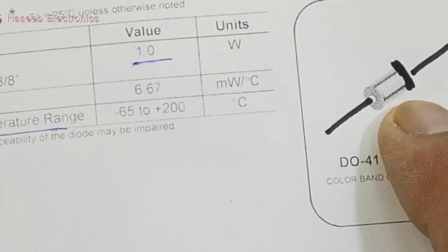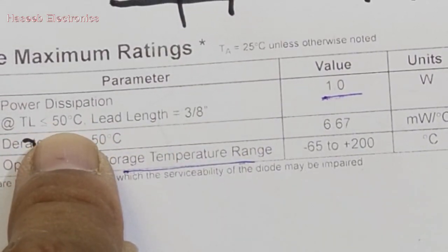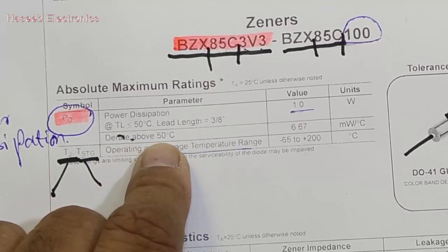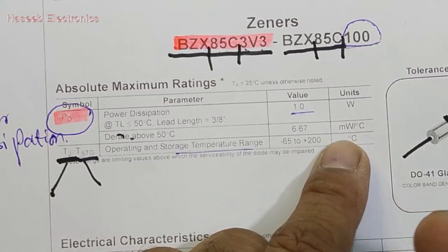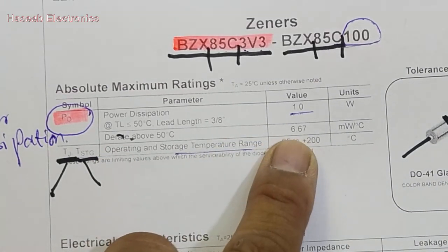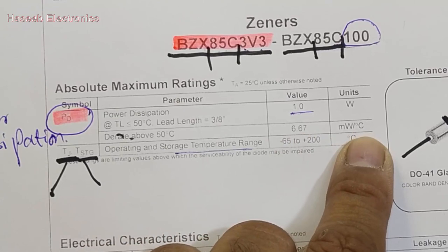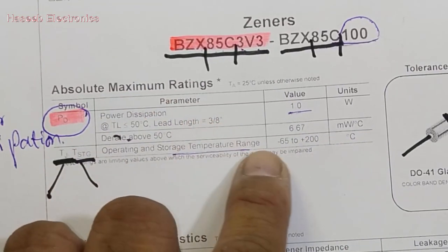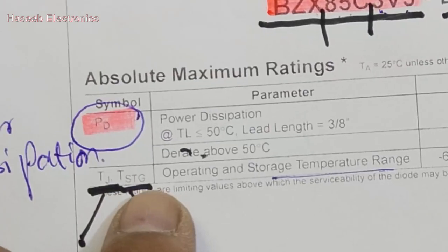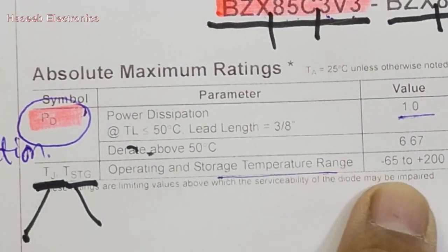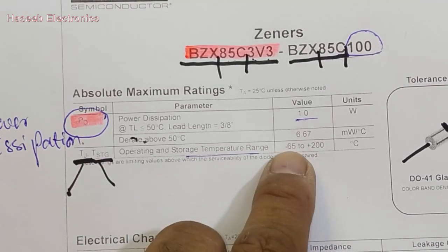The condition specified is lead temperature away from the body. It is a package with cathode, anode, and leads. When the lead length is 3/8 inch the lead temperature condition is 50 degrees centigrade. If the temperature increases above 50 degrees, we have to derate with 6.6 milliwatt per degree centigrade — each increment in temperature causes the power rating to derate by 6.6 mW/°C. Then we have Tj and Tstg: junction temperature (operating temperature) and storage temperature, from minus 65 to 200 degrees centigrade.